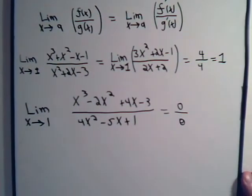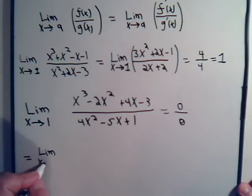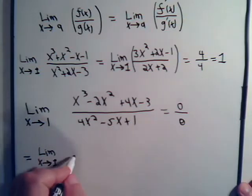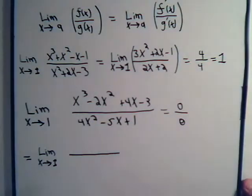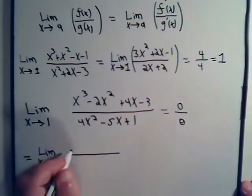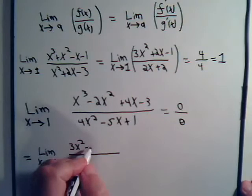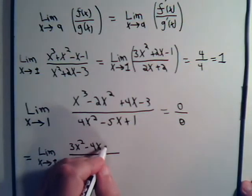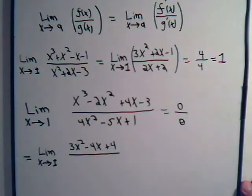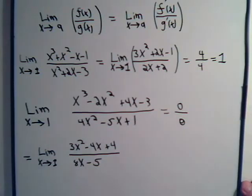So we say this would also equal the limit as x approaches 1 of a new function which we get by taking the derivatives. 3 times x squared minus 4x plus 4, and this would be 8x minus 5.